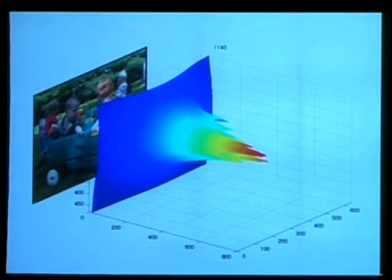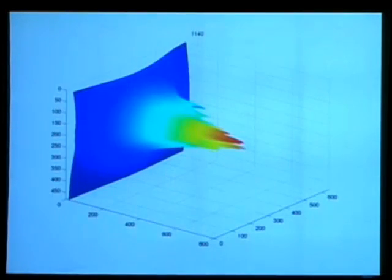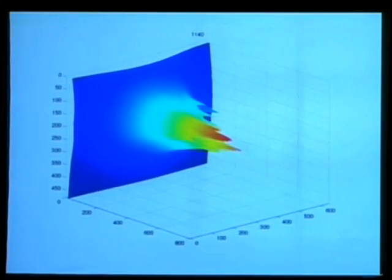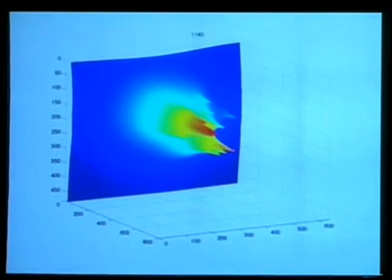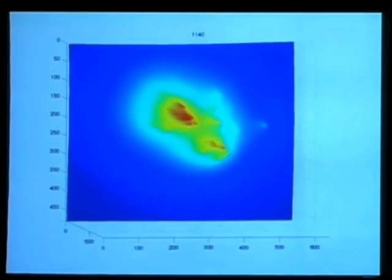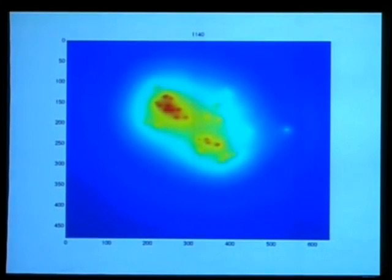All right, now you remember that they're watching that video. Let's take a bird's-eye view of that. And now you're going to have what we call a salience map. And in the salience map, the hotter the color, the more people are looking at that spot at that particular moment.